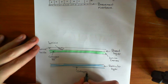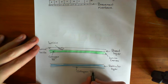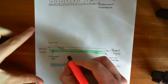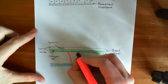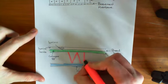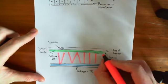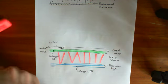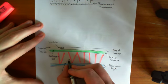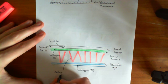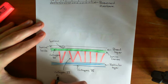And the two layers were joined by loads of collagen type 7 fibrils — collagen type 7 anchoring fibrils. So these things here. Those are collagen type 7 anchoring fibrils. Collagen type 7 anchoring fibrils.